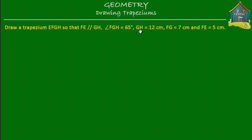The side GH is equal to 12 centimeters, FG is equal to 7 centimeters, and FE is equal to 5 centimeters. In a trapezium we know that there is one pair of sides that is parallel to each other — in this trapezium EFGH, the side FE is parallel to GH.